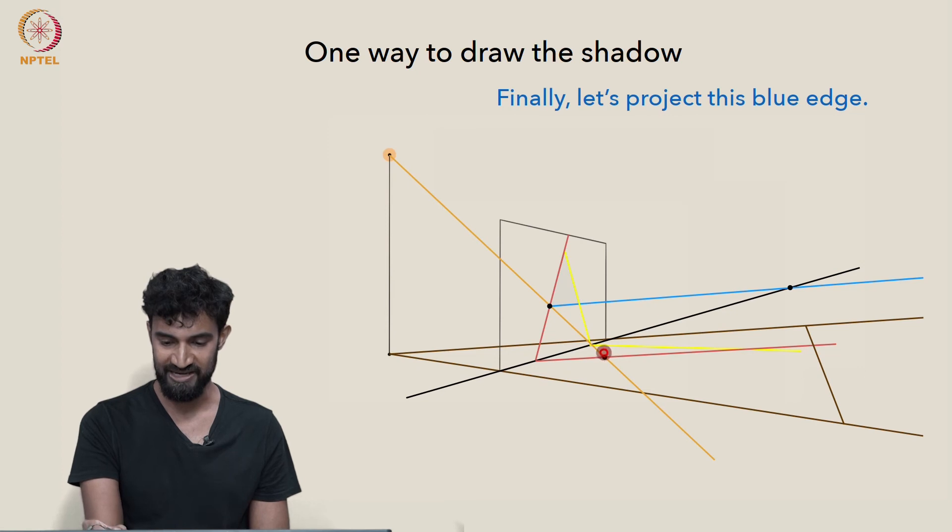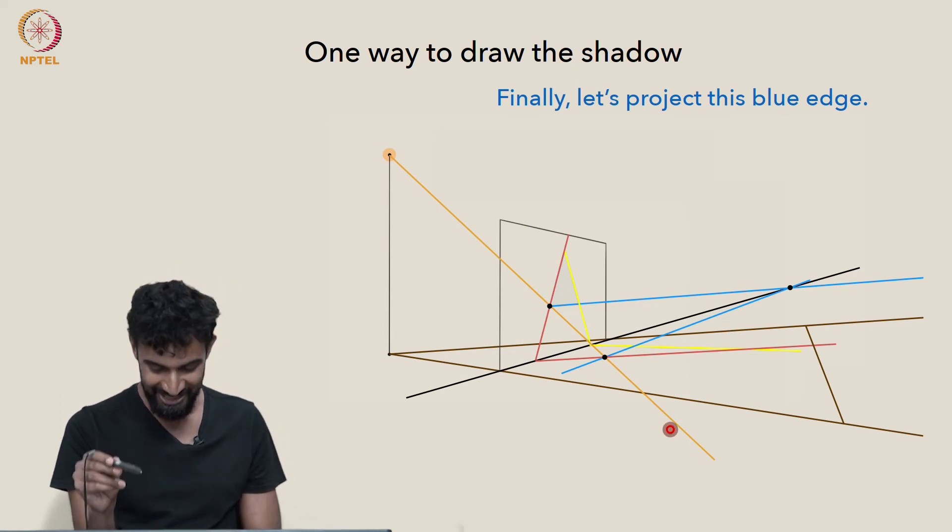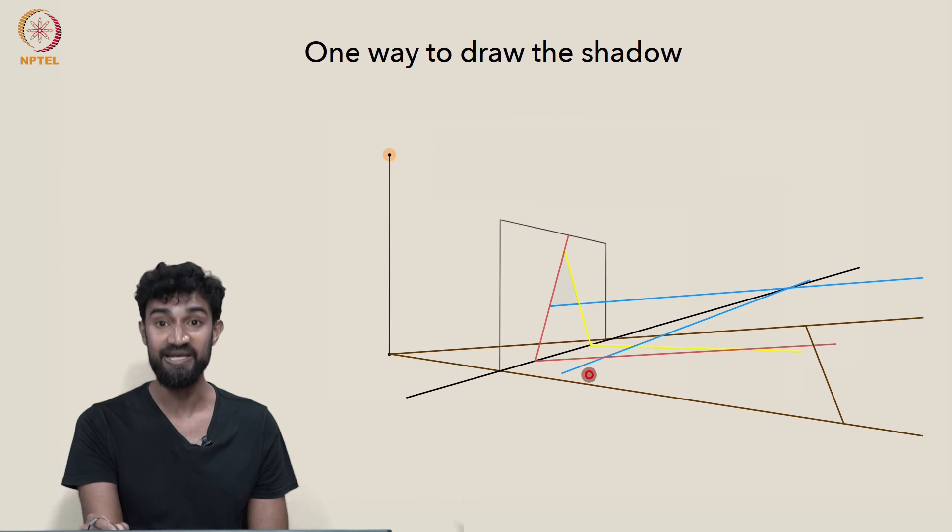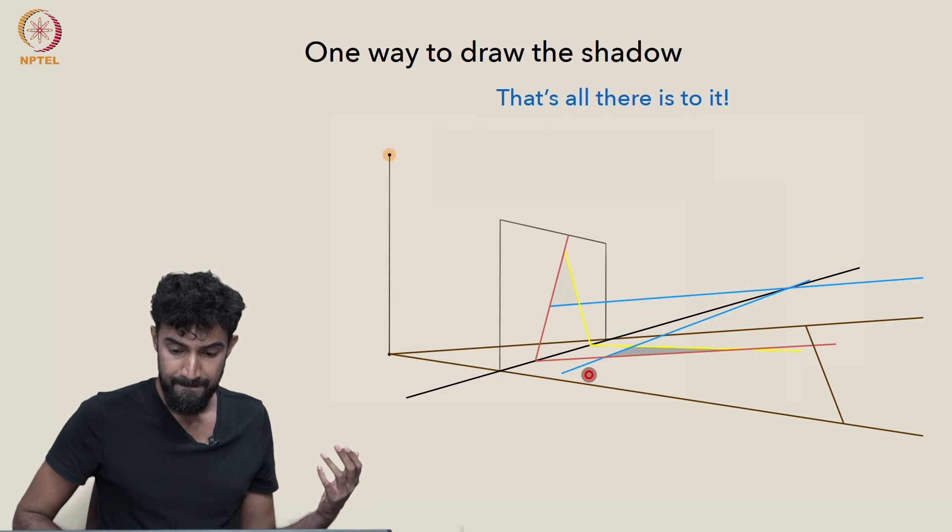So we can connect the dots and get our blue shadow, our blue edge shadow. And there's a lot of lines here, but actually we've pretty much done it. Let's erase our sight lines. We have our shadow triangle. We have all three edges in shadow form. So there it is. That's all there is to it.